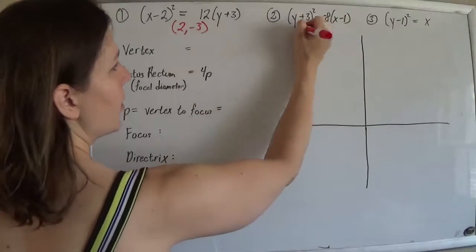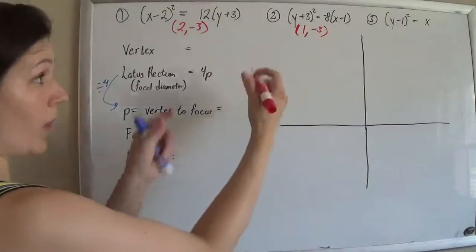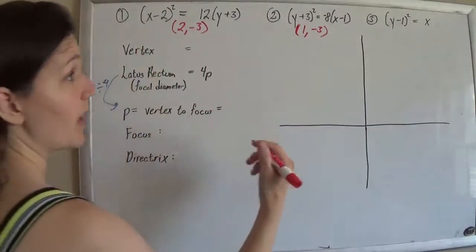This guy would be 1, negative 3. Don't be fooled - the x affects the x, the y affects the y, opposite signs because it's grouped in like that.